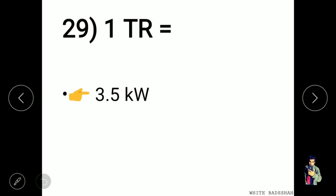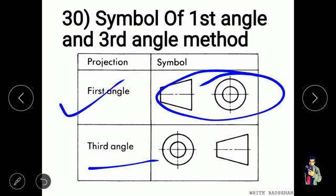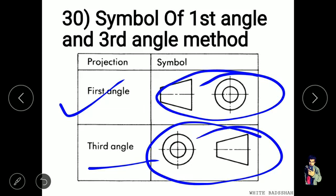1 TR (ton of refrigeration) is the unit of power representing a refrigeration effect in air conditioning or refrigeration. 1 TR equals 3.5 kilowatts. In first angle projection, the object lies between the observer and the plane of projection; in third angle projection, the plane of projection lies between the observer and the object.